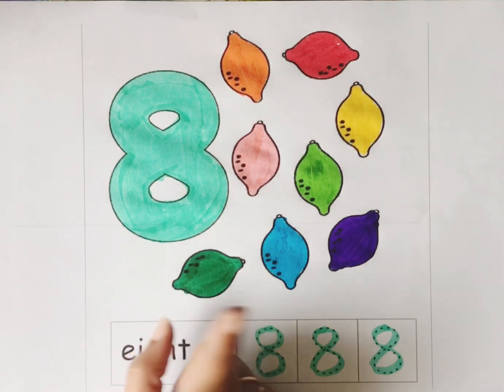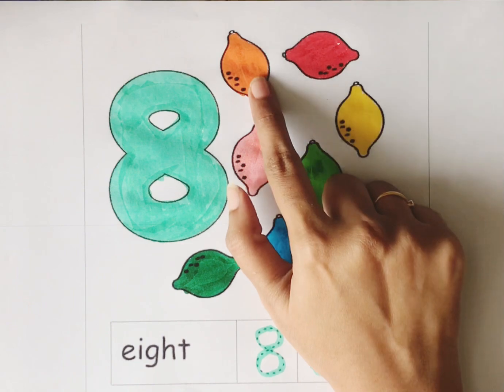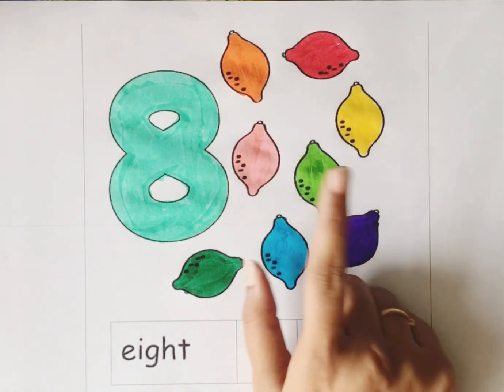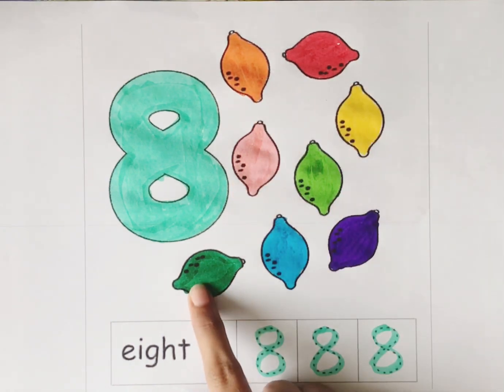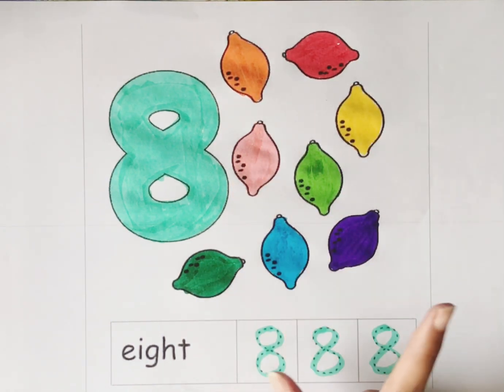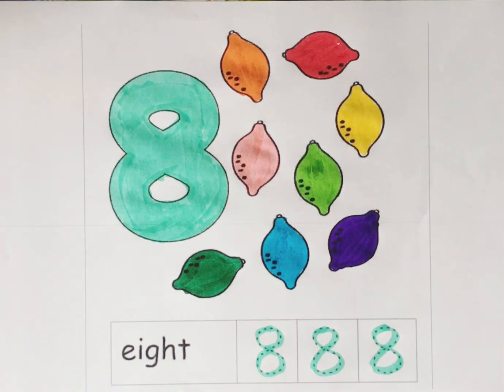We have 1, 2, 3, 4, 5, 6, 7, 8. Eight lemons.